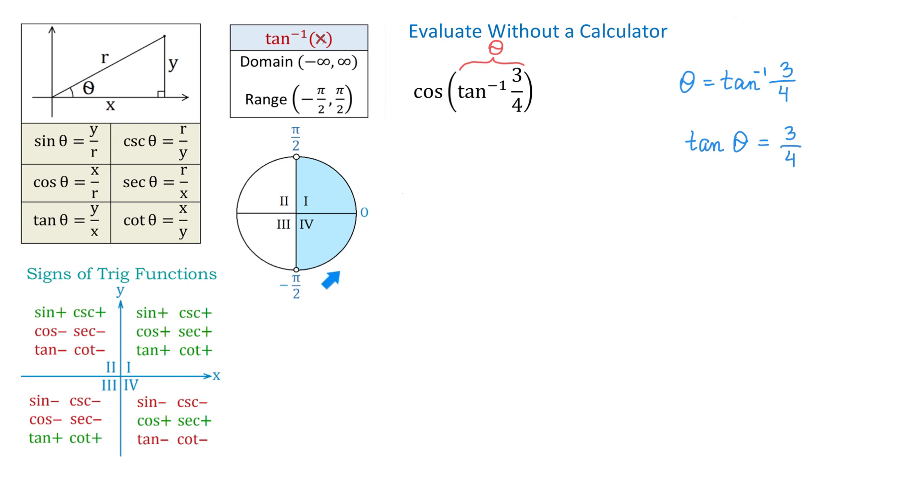From this diagram, we see that this angle has to be either in quadrant 4 or in quadrant 1. If we look at the signs of the trigonometric functions, we see that in quadrant 1 tangent is positive. However, in quadrant 4 tangent is negative. In our problem, 3 over 4 is a positive number, and this means that the angle will be in quadrant 1.